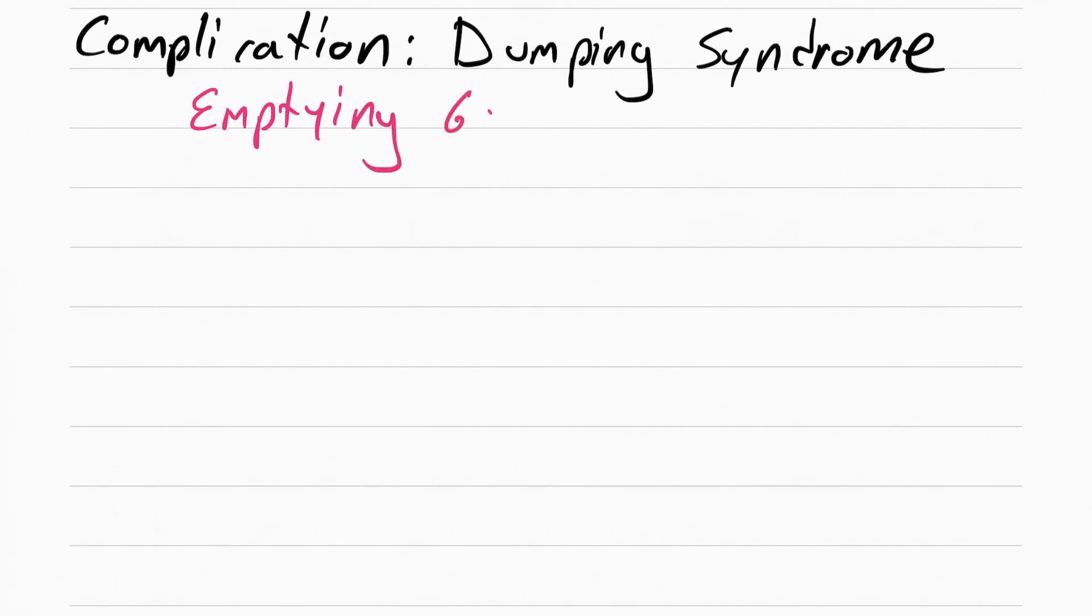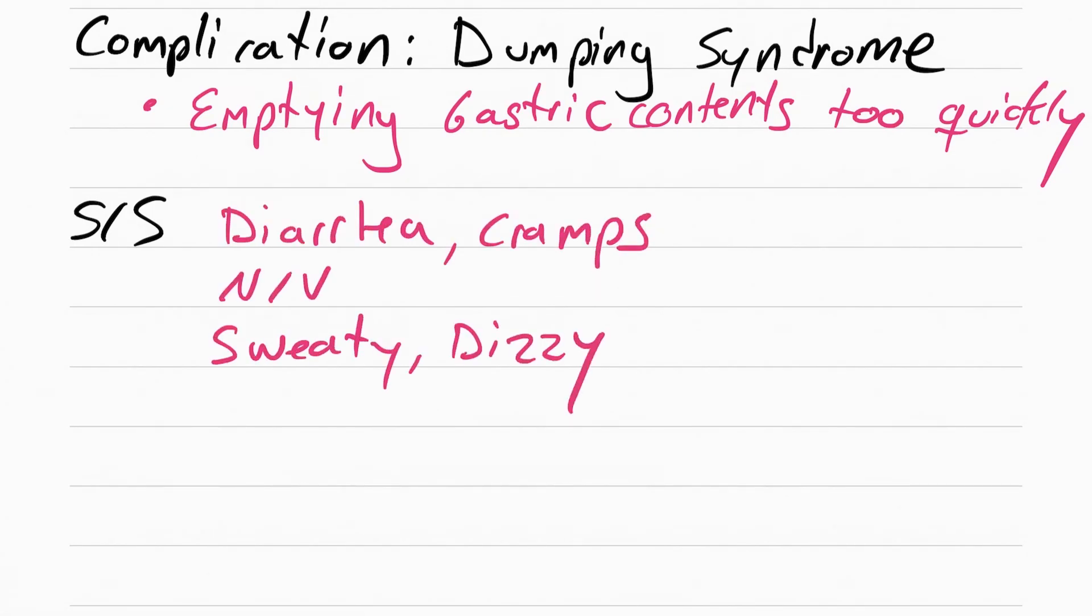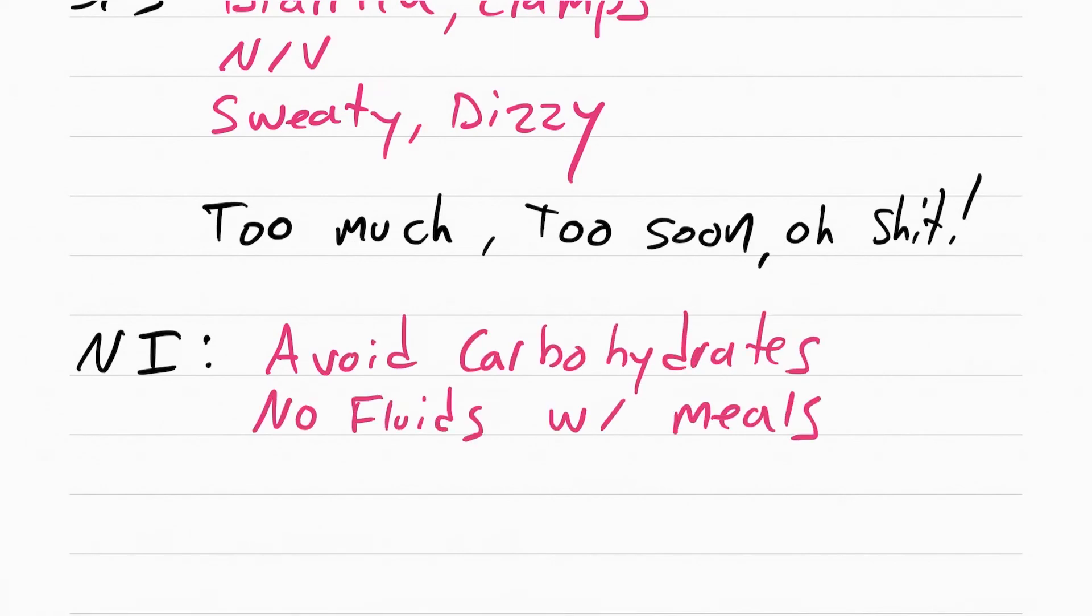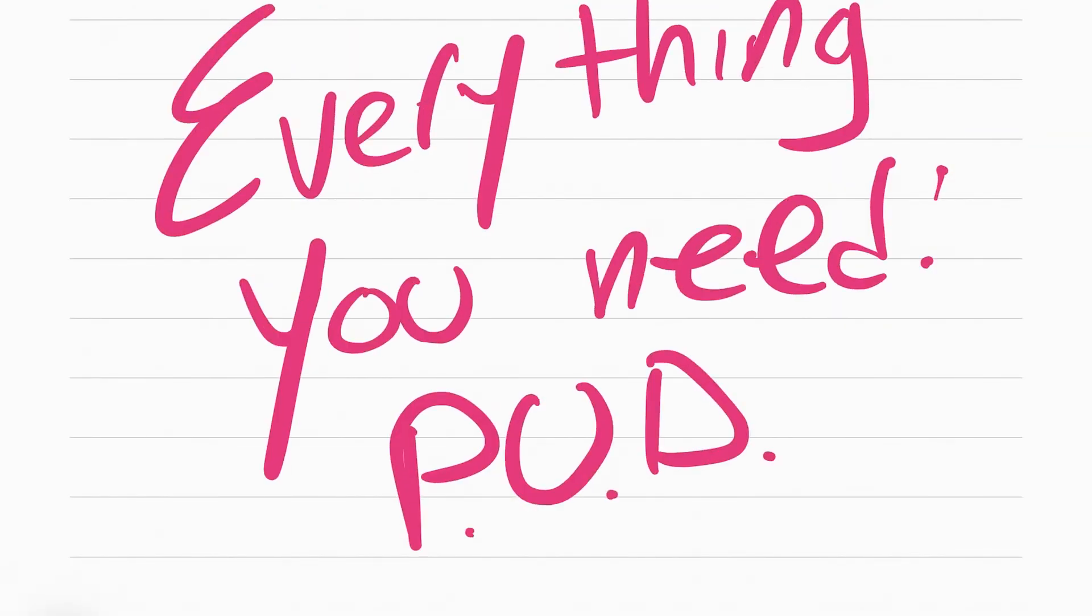One of the complications that comes from this procedure is dumping syndrome, which is essentially the bowels emptying out way too fast. Some of the symptoms the patient can experience include diarrhea, cramps, nausea, vomiting, sweating, and dizziness. Or how I like to say it, too much, too soon, oh shit. How you can help your patient is by telling them to avoid carbohydrates, telling them not to drink fluids with their meals, tell them to lie down after they eat, and tell them to have small frequent meals. That is everything you need for peptic ulcer disease.